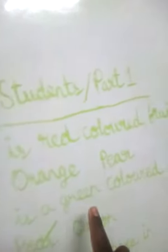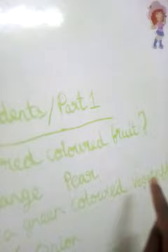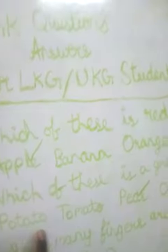Which of these is a green colored vegetable? Potato, tomato, peas, or onion? Peas is the correct answer.